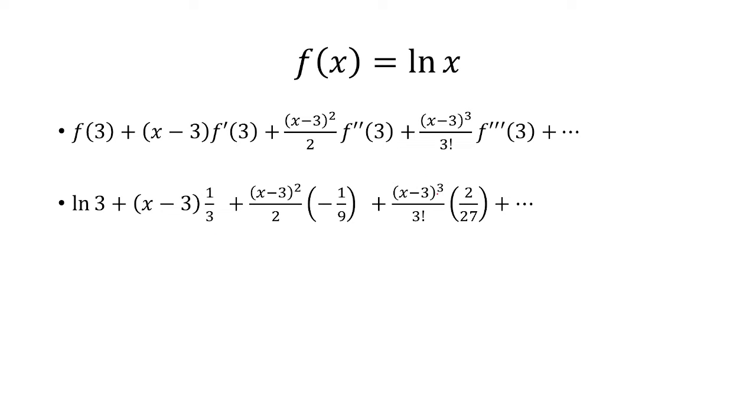So those will be the coefficients, along with the denominator being 1 factorial, 2 factorial, 3 factorial. The numerator is x minus 3 raised to the nth power. This ln of 3 does not belong with the rest, it's not of the same form. So we're going to put that to the side and find a formula for the rest of the series.